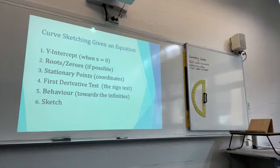For stationary points, think about the coordinates of stationary points. We'll do the sign test — the first derivative test — whether it's positive gradient or negative gradient. Think about the behavior towards infinity and then you can sketch. If you know all the steps, you'll be able to sketch the curves.